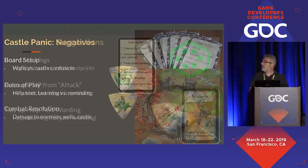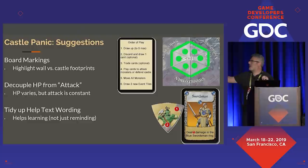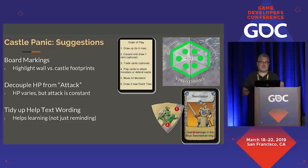Some suggestions the group came up with: marking the board — there are ways to elegantly put silhouettes of where wall versus keep pieces would go, balancing art and UX trade-offs. Decoupling hit points from attack: using specific icons to indicate damage on the cards that map onto the pieces. And tidying up the help text wording to be useful to both new players and returning players who might have forgotten some rules — adding things like 'draw up to five max cards' and 'move all your monsters.'